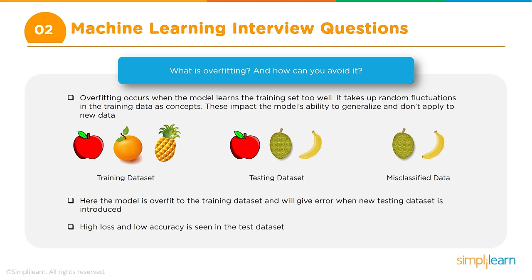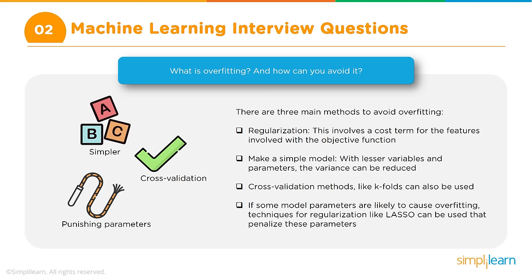To avoid overfitting, there are multiple techniques. The most common is regularization. Within regularization there are subtypes like dropout in the case of neural networks. Mentioning regularization as the technique should generally be sufficient.